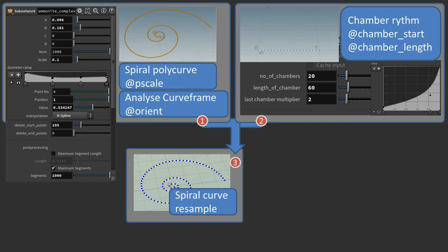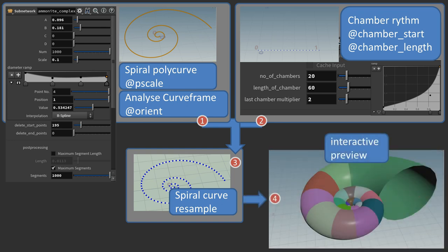After creating the sizes of the chambers, the spiral will be resampled to the desired number of total points. And the p-scale attribute will be interpolated by the resampled SOP. To be able to set the values interactively, a nicely colored preview representation of the ammonite will be generated. This helps a lot when adjusting the spiral and the chamber size settings.